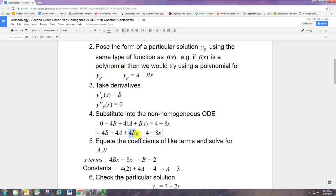If like terms have to match up, well there's only one x term on the left, and there's only one x term on the right, and so those have to be equal. And that tells you what B is, tells you B has to equal 2.